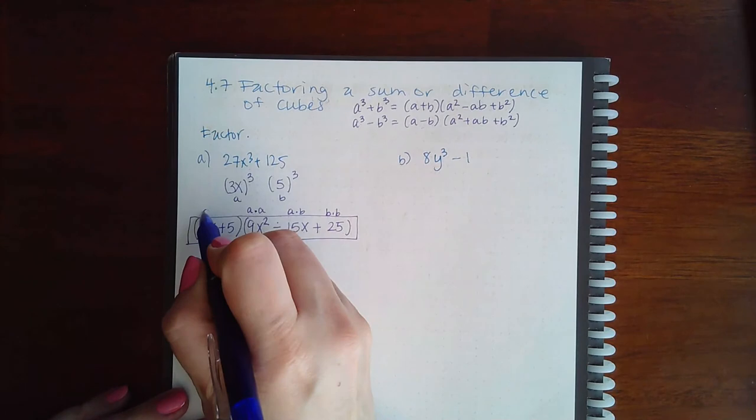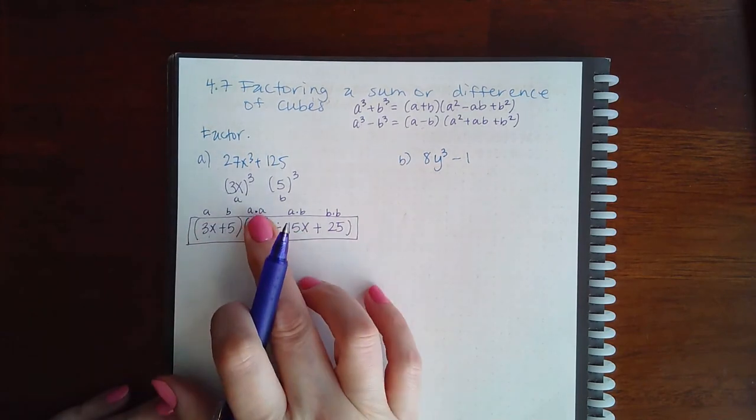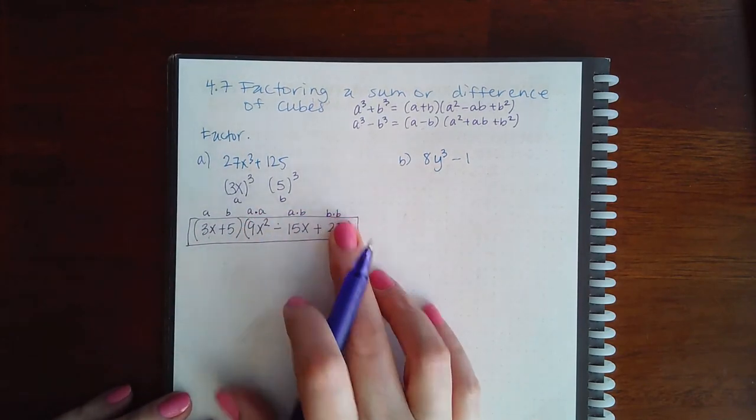And then the way I remember this is a, b in the first one, and then a, a, a, b, and then b, b for the last one.